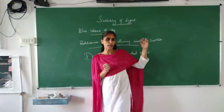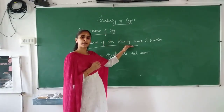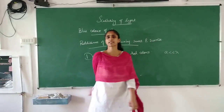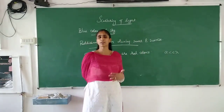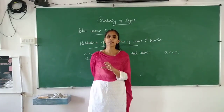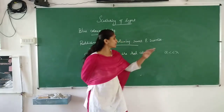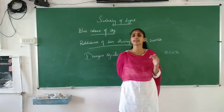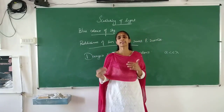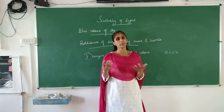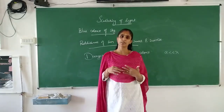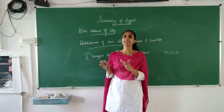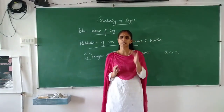Now we will discuss why clouds appear to be white. In all previous cases — blue sky, reddish sun, red danger signals — the condition was that the size of the molecule should be less than the wavelength, so selective scattering takes place. In the case of clouds, water droplets are present whose size is not very much smaller than the wavelength, so this condition is not satisfied. Because of this, all colors of light are scattered equally, and all colors reaching our eye combine to give white color.